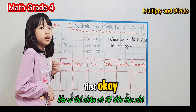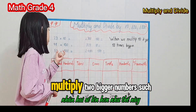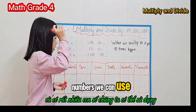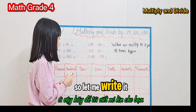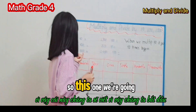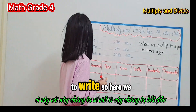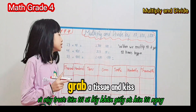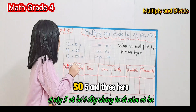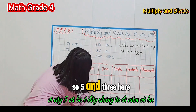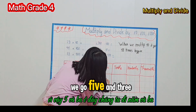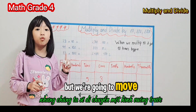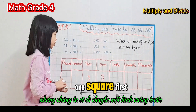Let's give an example — multiply by 10 first, then we'll move to bigger numbers. I'm going to write up 53 for you. Let me grab a tissue in case we need to erase. So here we go — five and three. We're going to move one square to the left.